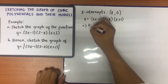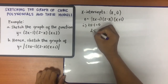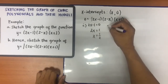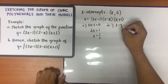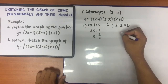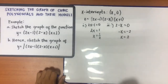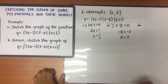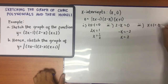The first solution: 2x − 1 = 0, therefore 2x = 1, so x = 1/2. The second solution: 2 − x = 0, so negative x = negative 2, giving x = 2. The third solution: x + 1 = 0, therefore x = −1.